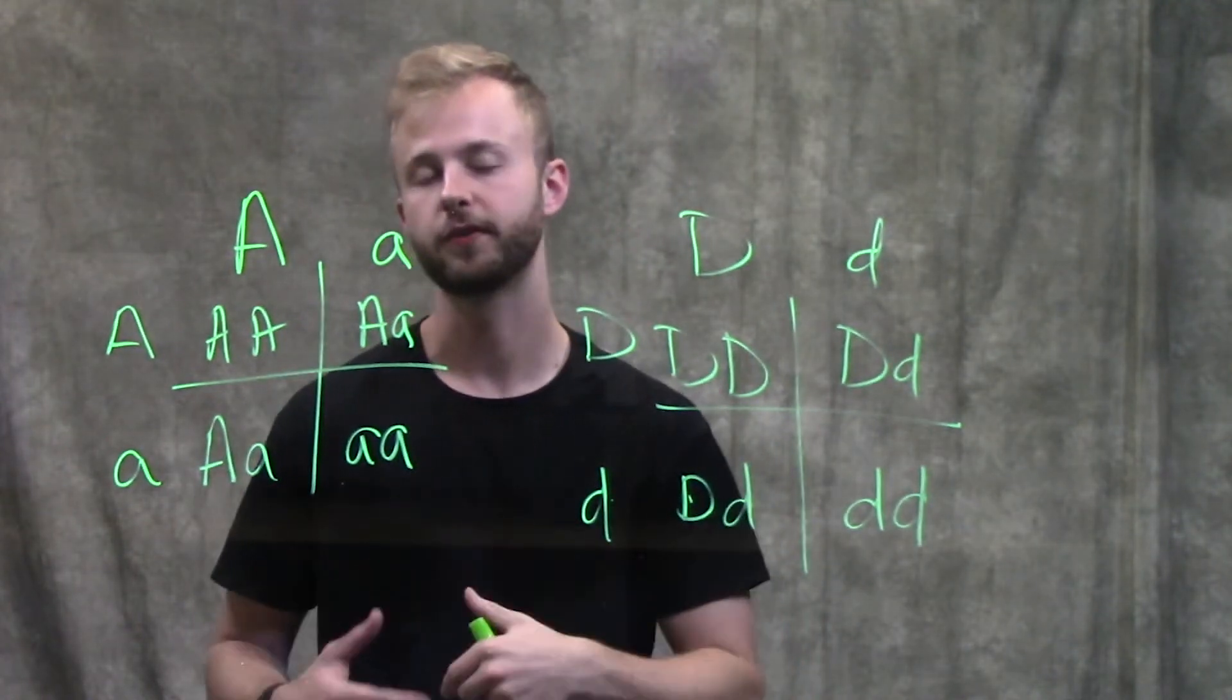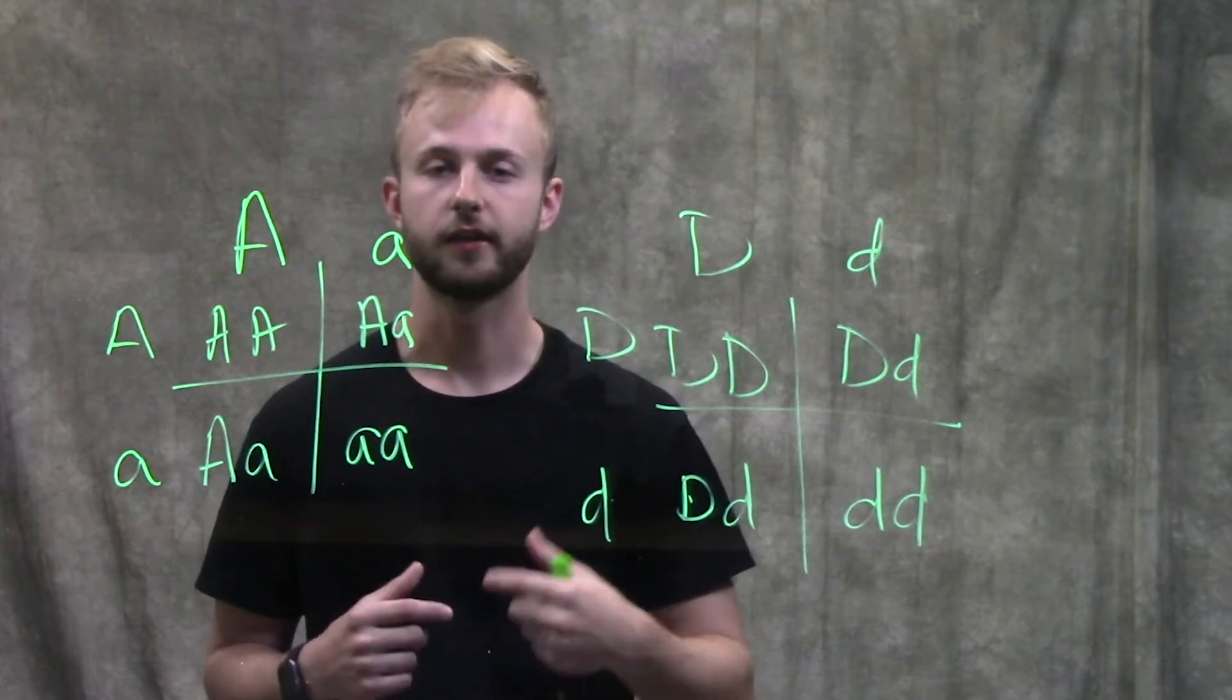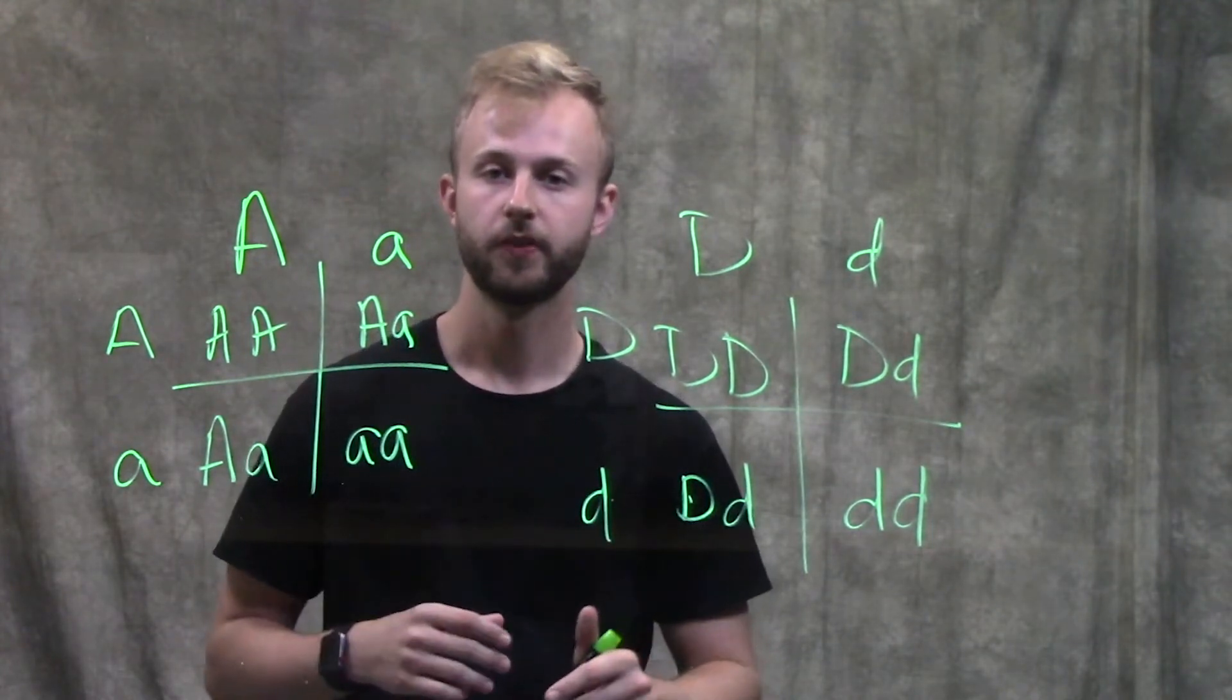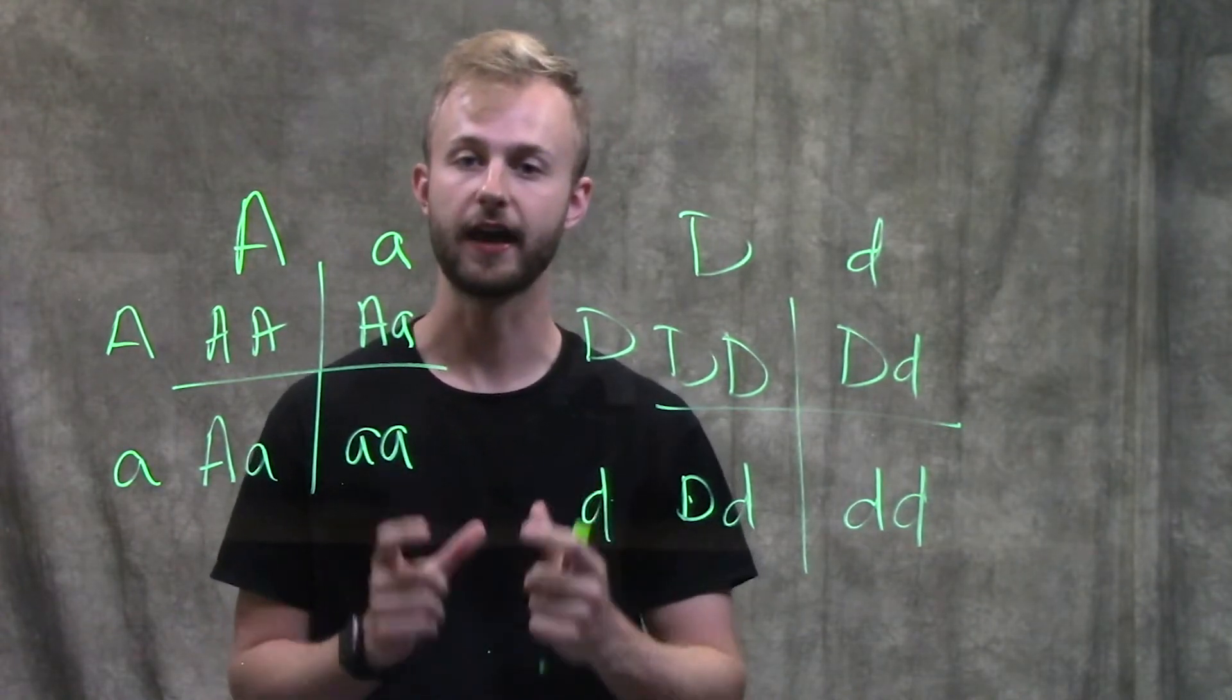We'll look at the multiplication rule first. The key word you need to look for when using the multiplication rule is 'and.' Anything that requires the multiplication rule is going to have the word 'and' in it.